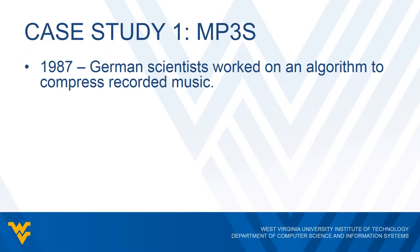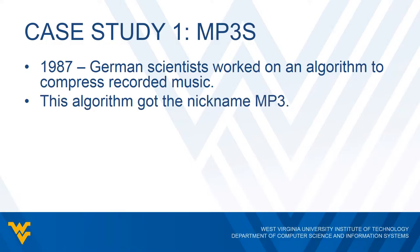In 1987, some scientists in Germany started working on an algorithm to compress digital files that stored recorded music on CDs. Using a complex model of how humans perceived sound, they devised a method called the Moving Picture Experts Group Audio Layer 3. That was too long, so this algorithm was nicknamed MP3 to make it easier.